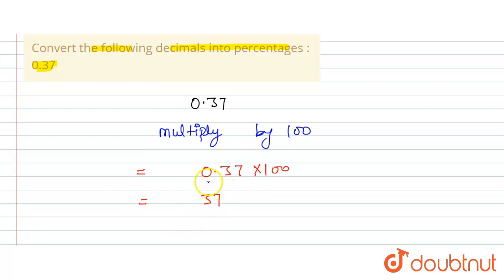So this is the percentage of 0.37, that is 37 percent. The decimal changes into percent, so final answer is 37 percent. Thank you.